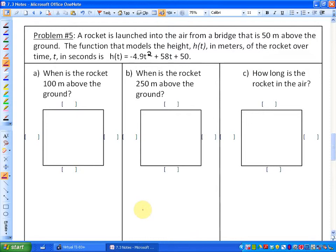Alright, so this problem has three parts. It says a rocket is launched into the air from a bridge that is 50 meters above the ground. The function that models the height in meters of the rocket over time, t, in seconds, is that the height is equivalent to negative 4.9 times the time squared plus 58 times the time plus 50. Or in other words, again, we're going to be using a graphing calculator. It may be useful to picture this just as y is equal to negative 4.9x squared plus 58x plus 50.